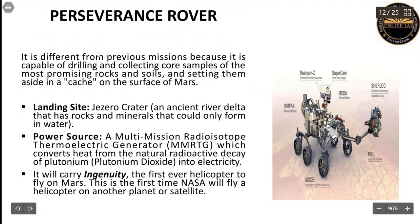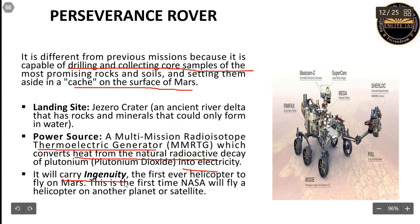The Perseverance Rover is different from previous ones as it is capable of drilling and collecting core samples of the most promising rocks and soils and setting them aside in a cache on the surface of Mars. The landing site is the Jezero Crater. The power source is a Multi-Mission Radioisotope Thermoelectric Generator, which converts heat from the natural radioactive decay of plutonium into electricity. It will also carry Ingenuity — the first-ever helicopter to fly on Mars.